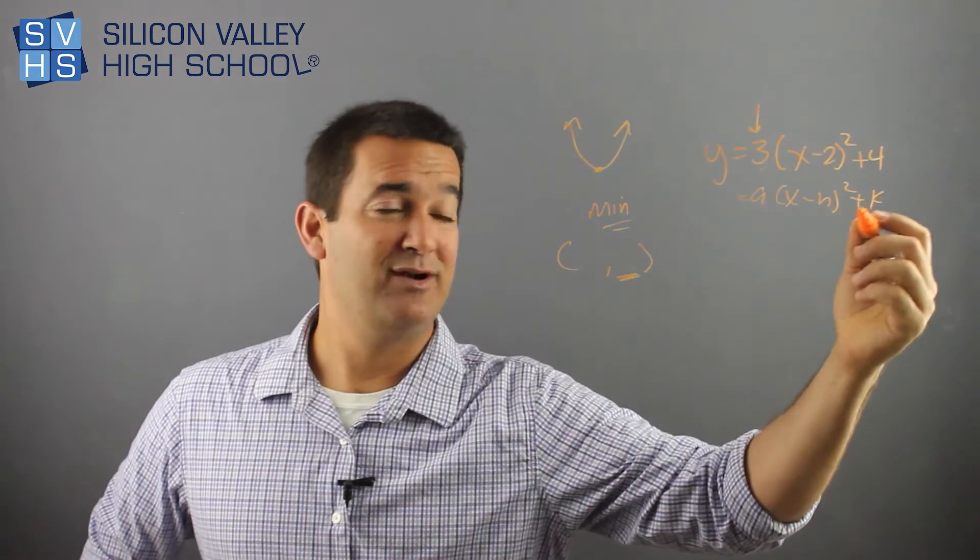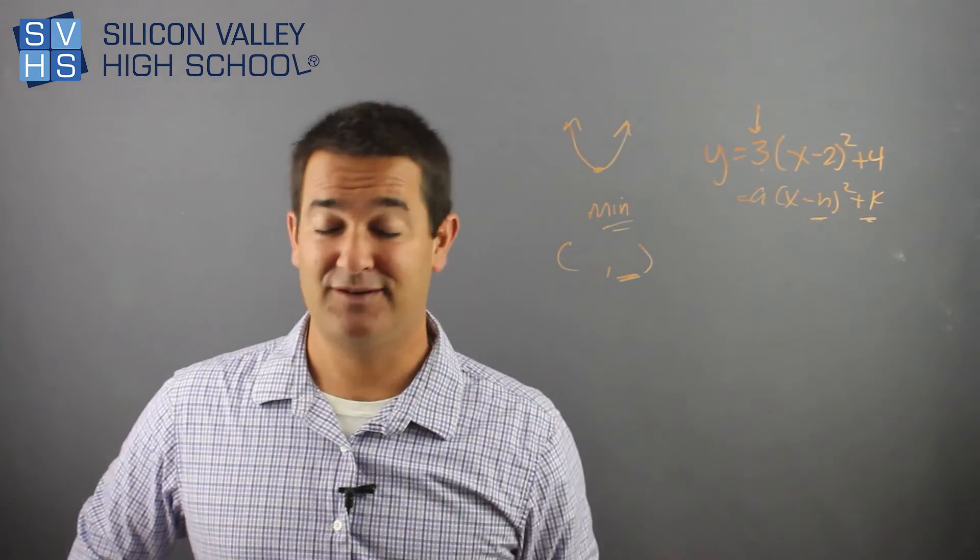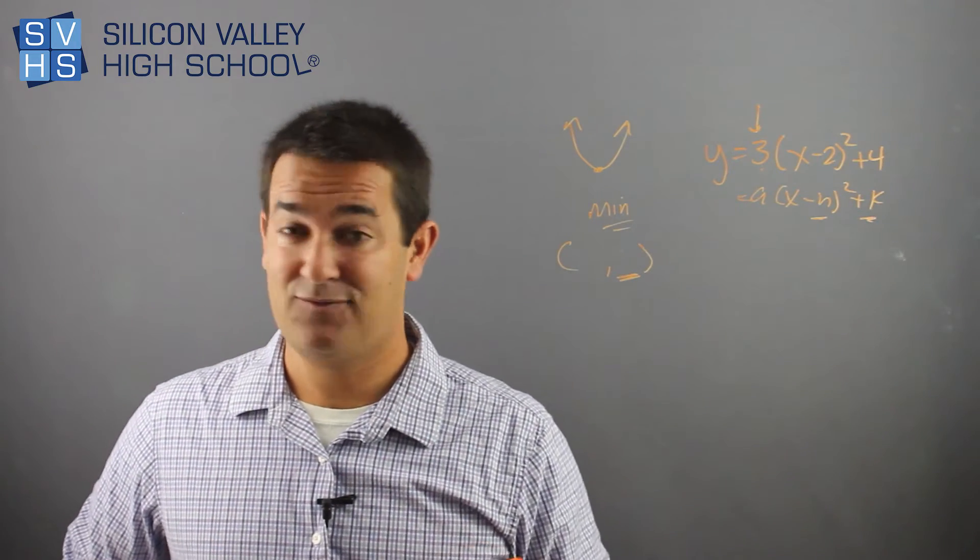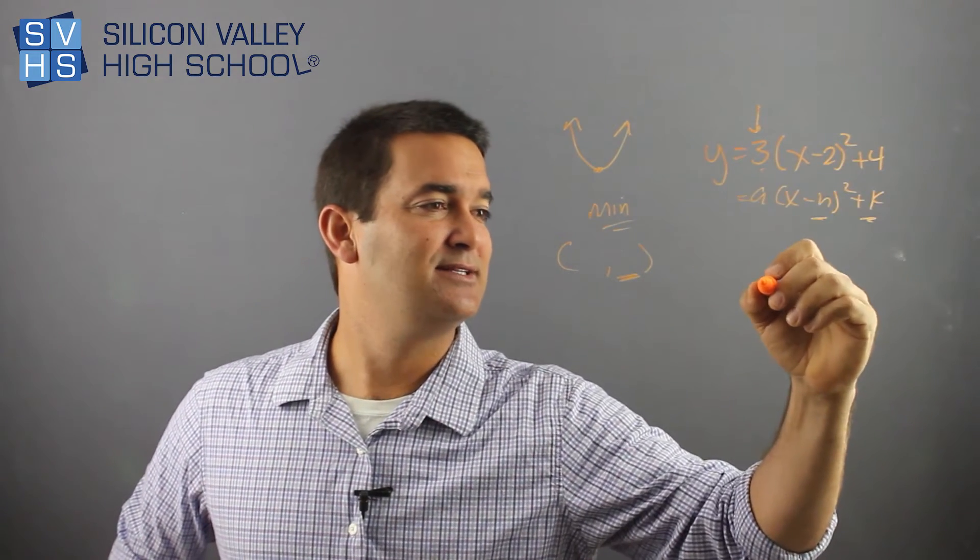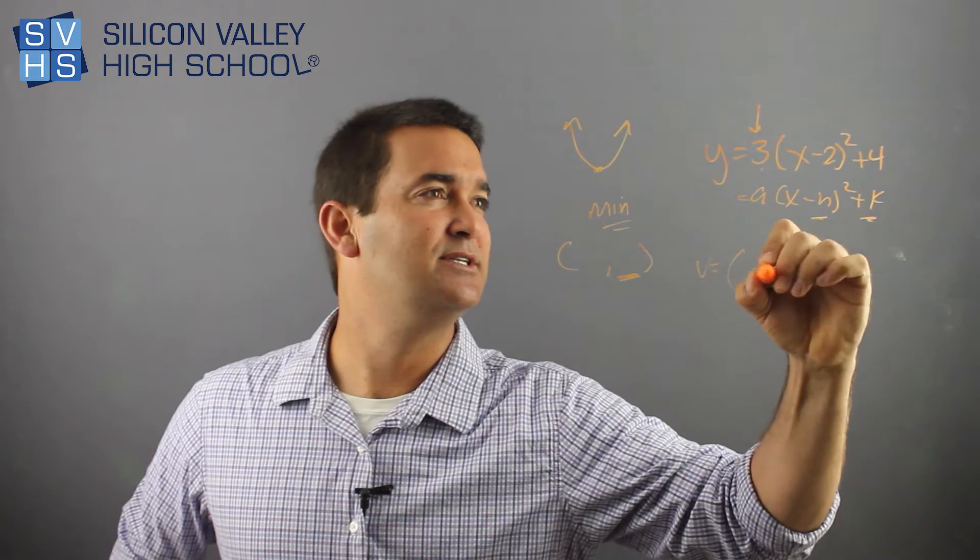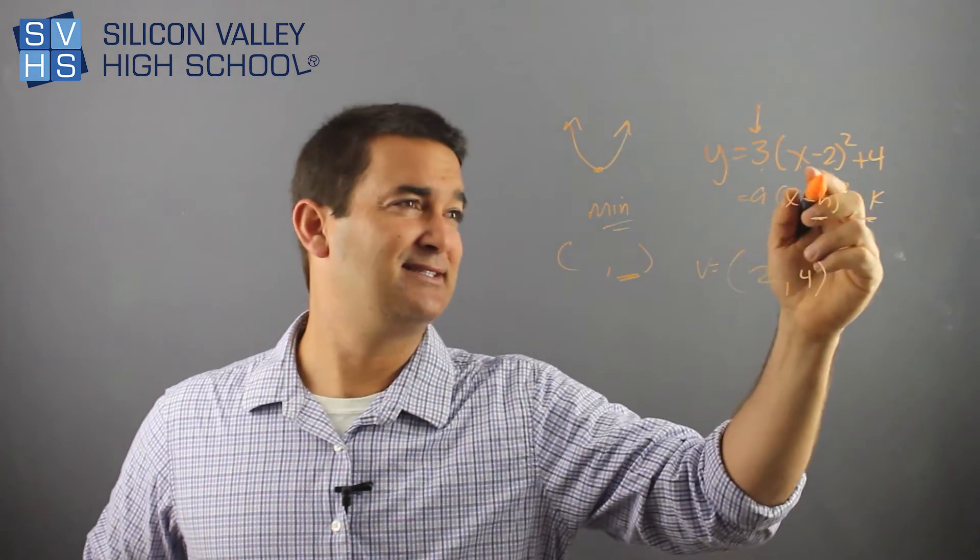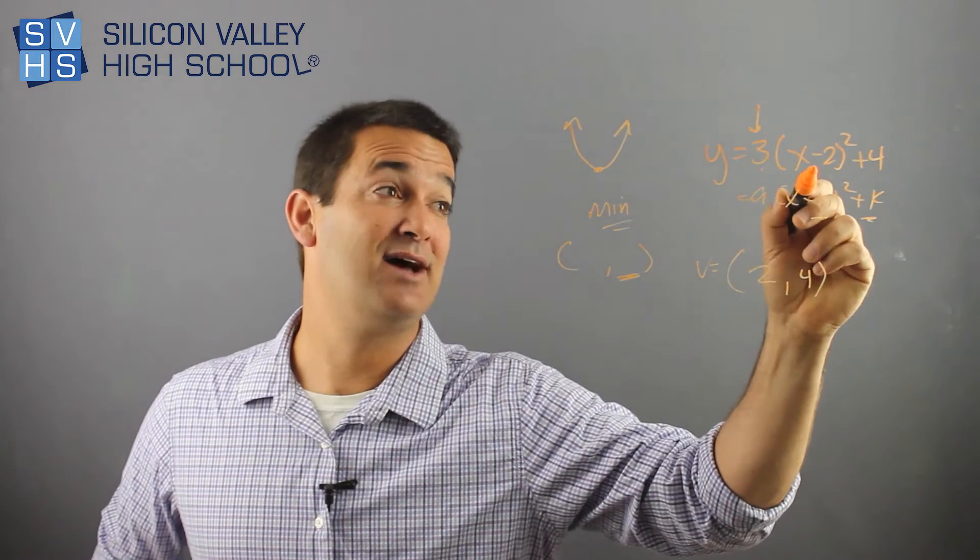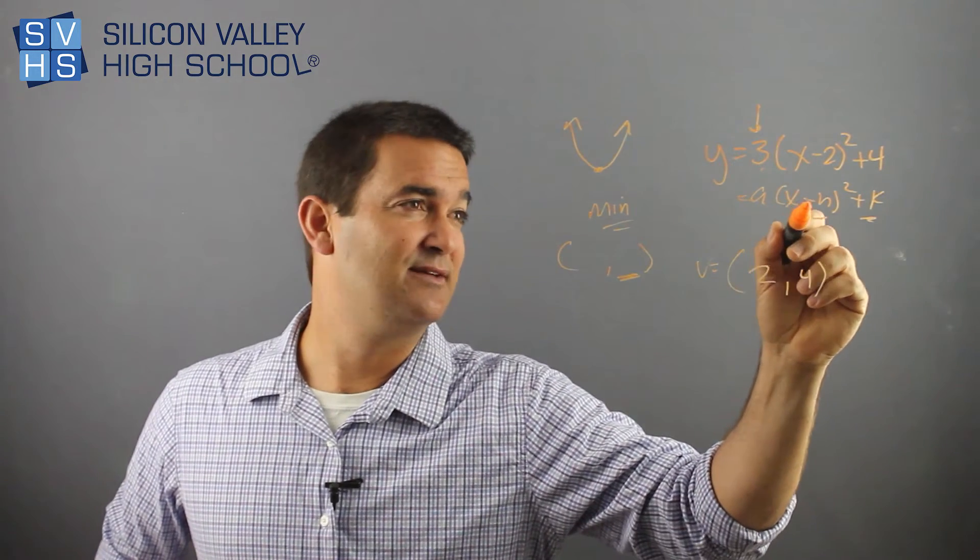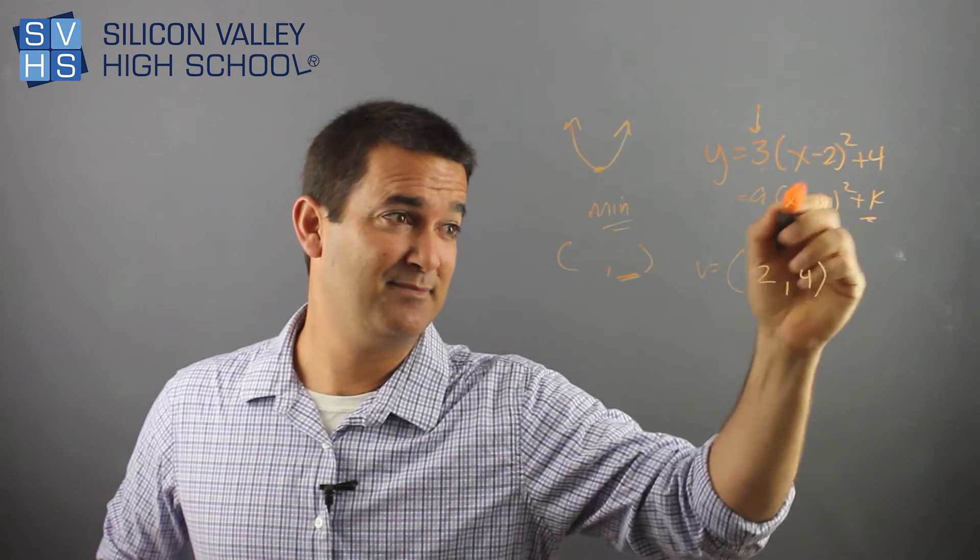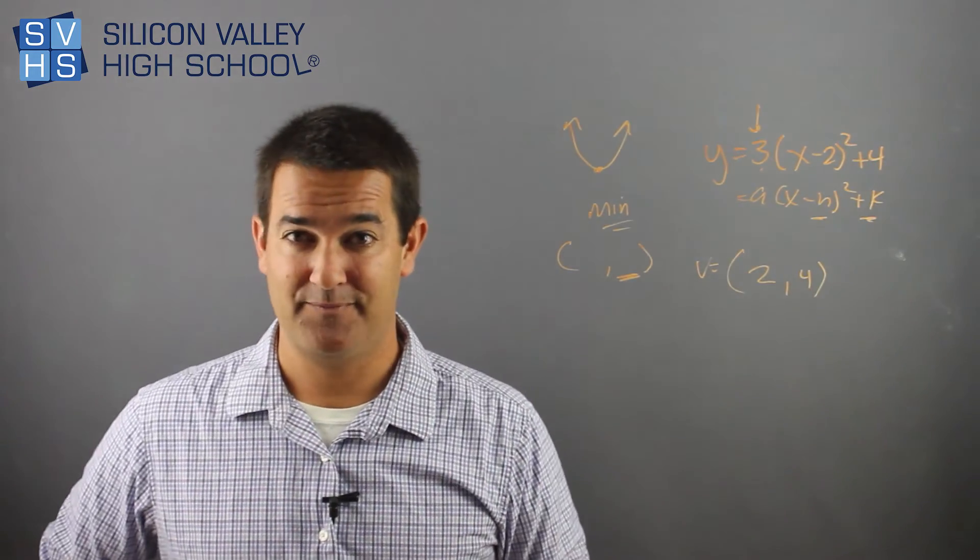This here is already in vertex form. Remember, the h, k is the vertex of any parabola in vertex form. So it looks to me like, oh, this is easy. The vertex equals two, comma, four. A little flashback to earlier lesson on how to find the vertex. This is not negative two, because the formula already has a negative. This is a positive two, comma, positive four.